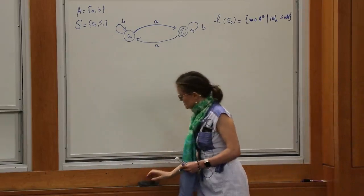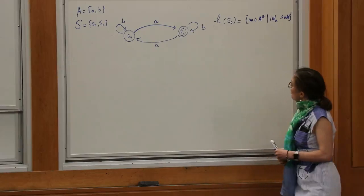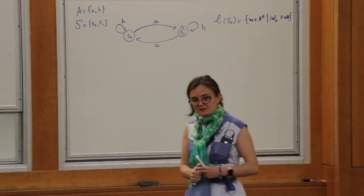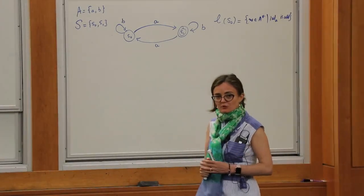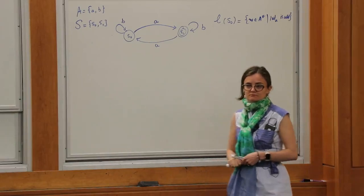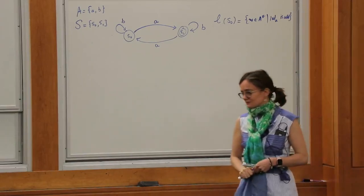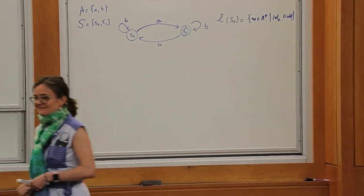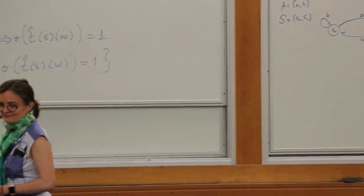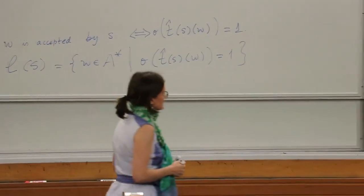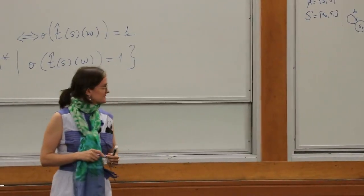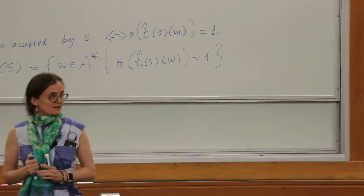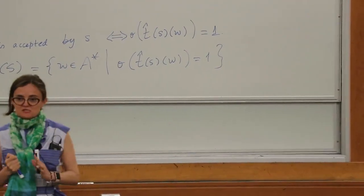Let's do one more example. Can we draw an automaton that accepts all words over the alphabet {A, B} such that the number of B's is a multiple of three? I'll give you a minute or so to think about it.